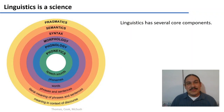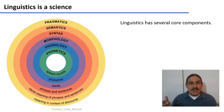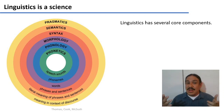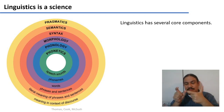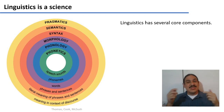Linguistics is a science, and it has several core components. Phonetics, which is sounds in your mouth or on your hands. Phonology, which has to do with sounds in your brain. Morphology, which has to do with how the different parts of words are formed. And syntax, which is how we combine different words into sentences.